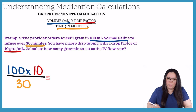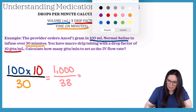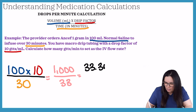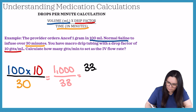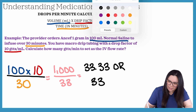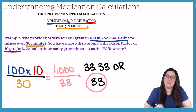When we multiply, we get 1000 over 30. Continuing to finish the equation, we get 33.33, or just 33 drops when you round it. The correct answer is 33.33 or 33, depending on what your dosage calculation exam asks.